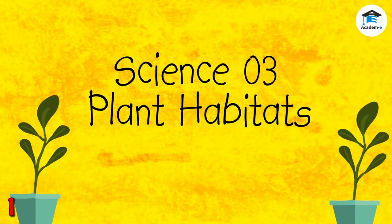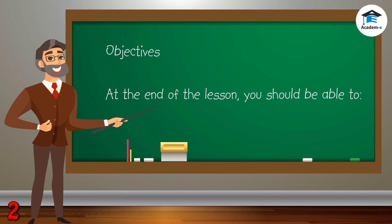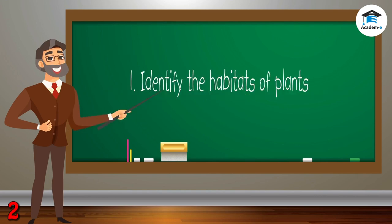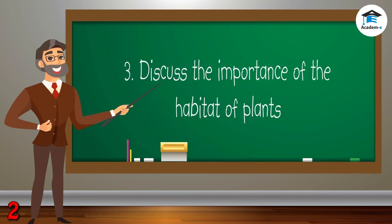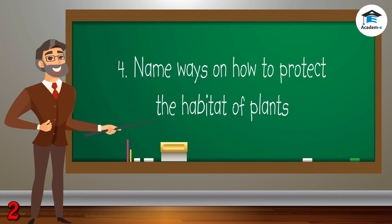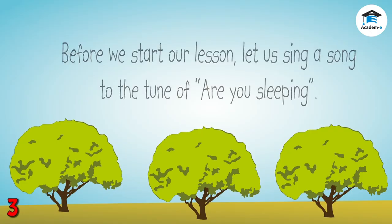Science 3: Plant Habitats. Objectives: At the end of the lesson, you should be able to identify the habitats of plants, classify plants as terrestrial, aerial, or aquatic, discuss the importance of the habitat of plants, and name ways on how to protect the habitat of plants.